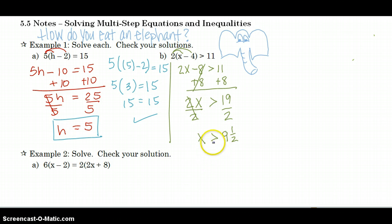I need to pick a number that's greater than 9 and a half, not equal to, greater than. So how about 10? 10 is greater than 9 and a half. So I'm going to take 10 and plug that in and see if it works. So 2 times 10 minus 4. I'm checking to see if that's greater than 11. So I'm going to take care of my parentheses first. 10 minus 4 is 6.